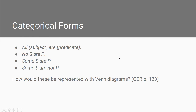Now we have different categorical forms: 'All S are P,' 'No S are P,' 'Some S are P,' and 'Some S are not P.' How would you represent these with Venn diagrams? Take a look at page 123 in your reading for the answer — you'll see the Venn diagrams for these categorical forms.